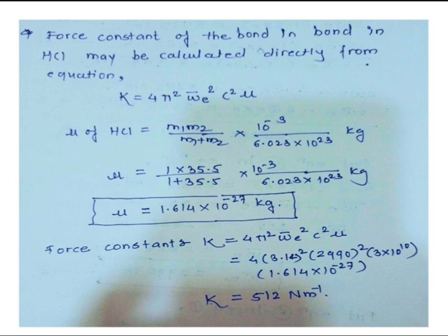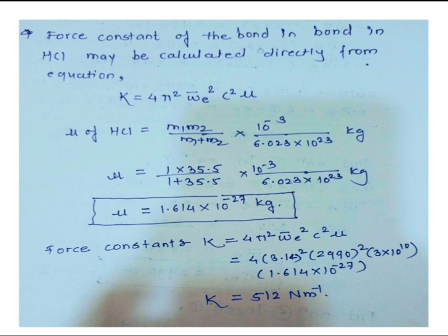The reduced mass of SCl: μ = m₁m₂/(m₁+m₂). To convert to kg, multiply by 10⁻³ and divide by Avogadro's number 6.023×10²³. Using m₁ = 1 (hydrogen) and m₂ = 35.5 (chlorine), we get μ = 1.614×10⁻²⁷ kg.